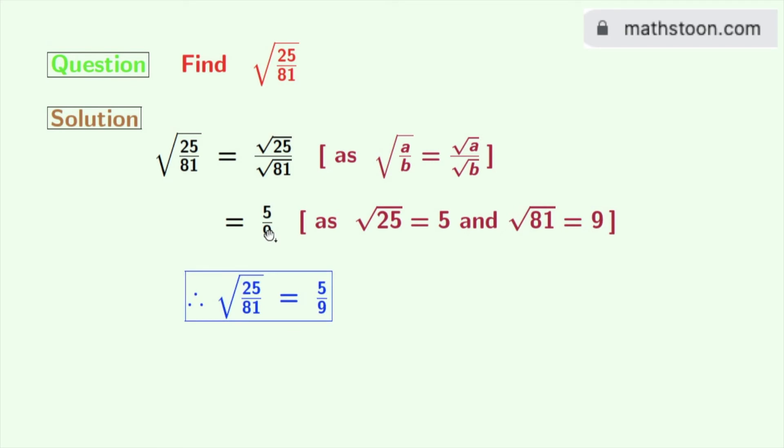So finally we get the value of the square root of 25 by 81 as 5 by 9. This is our final answer.